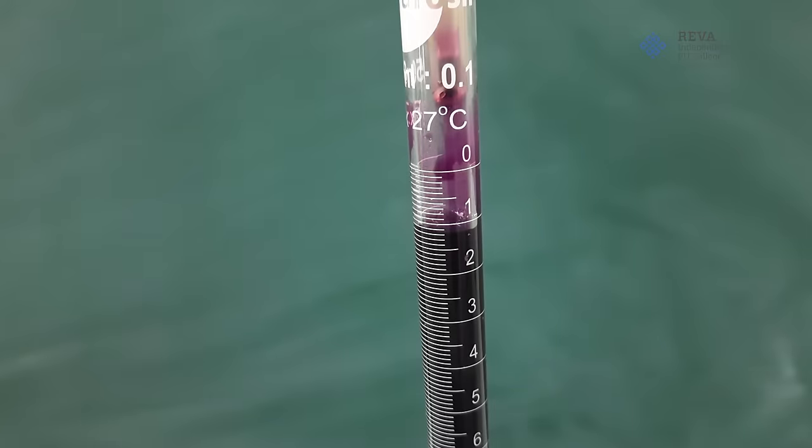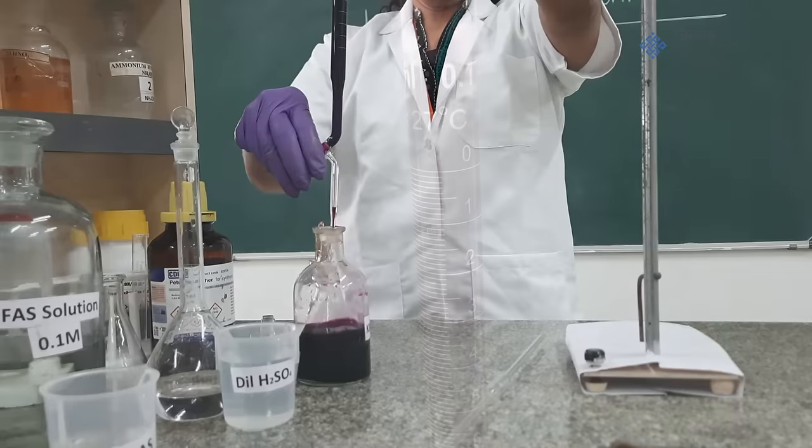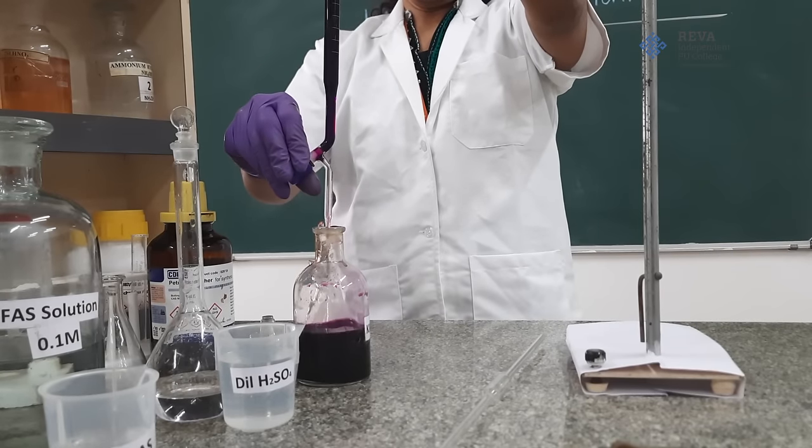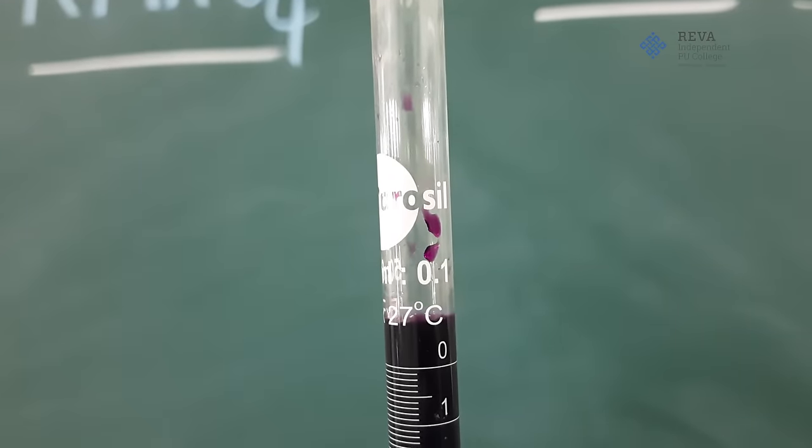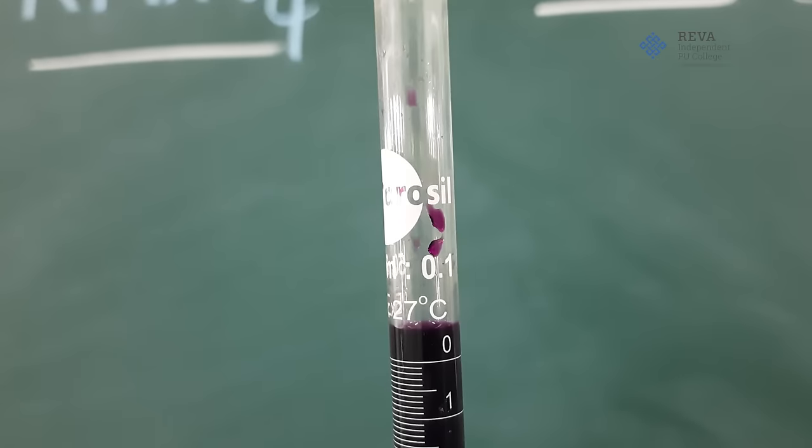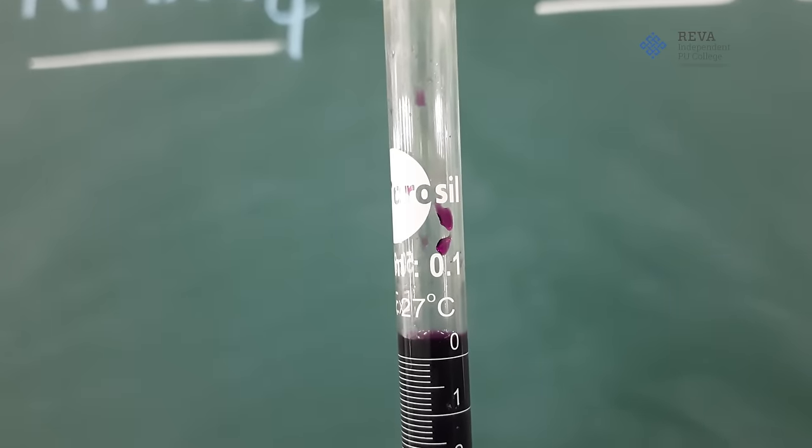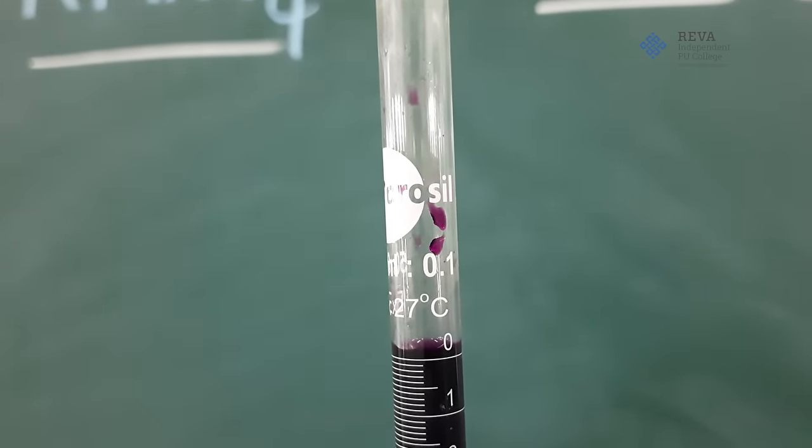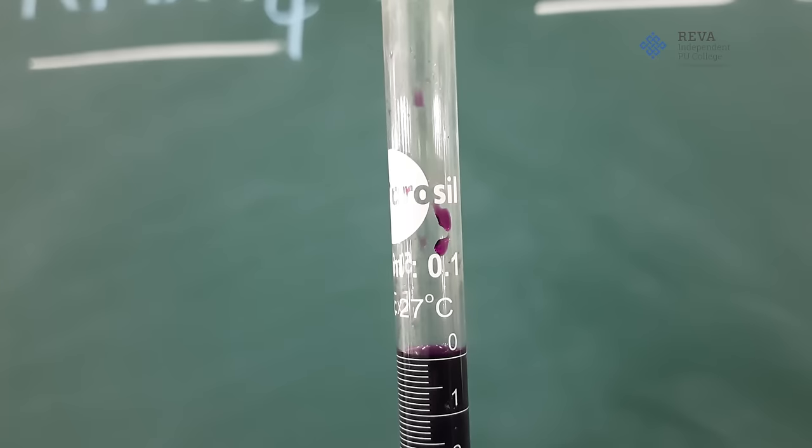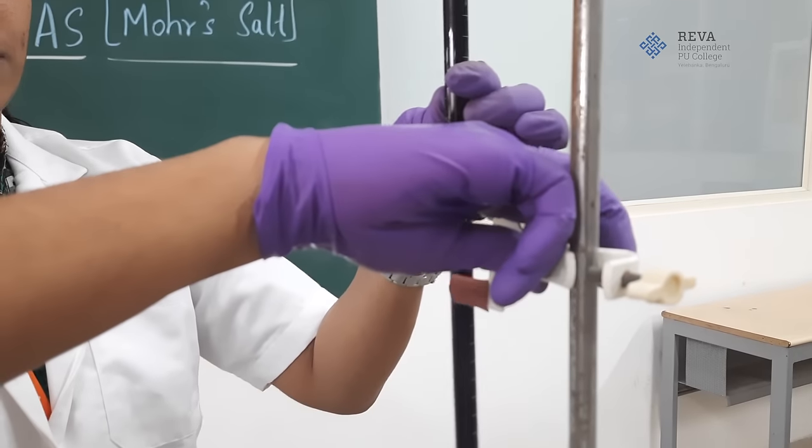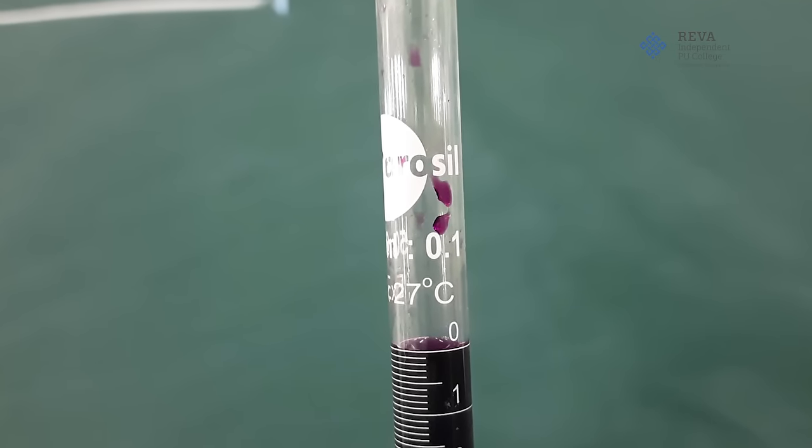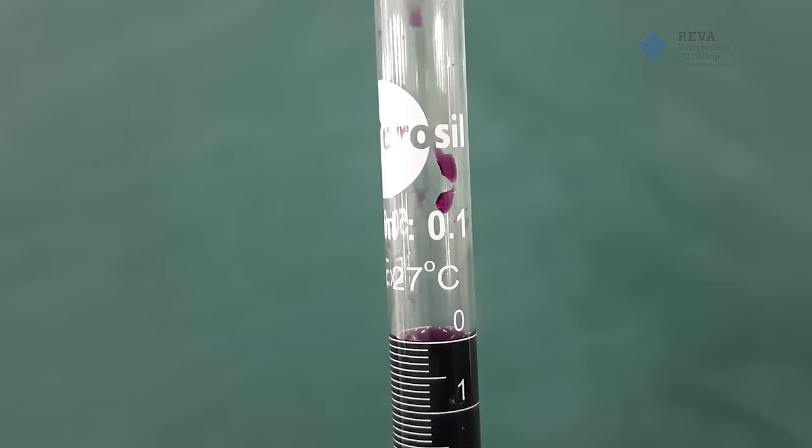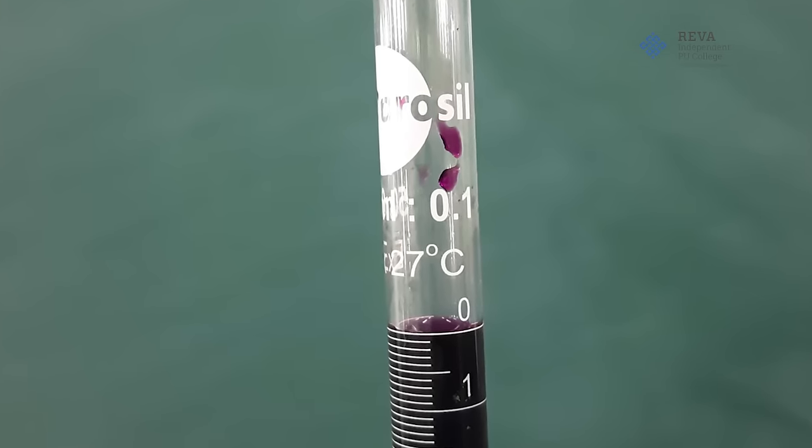fill the burette using potassium permanganate solution, which is an oxidizing agent. Before starting an experiment, we should be careful that the nozzle should be filled. Thus, fill the nozzle and now adjust the solution to zero mark by making upper meniscus of potassium permanganate coincide to zero in the burette and clamp it to the stand. And since potassium permanganate is a colored solution, we should look for upper meniscus.